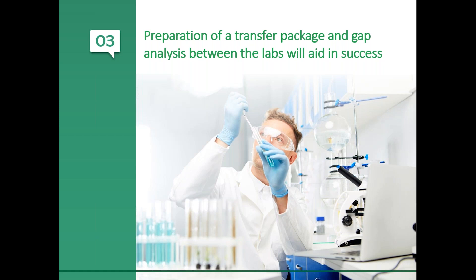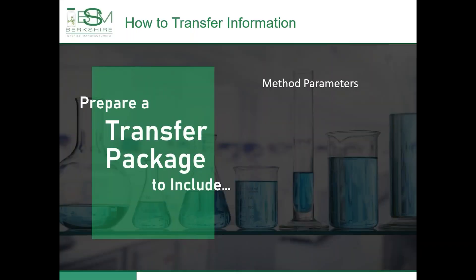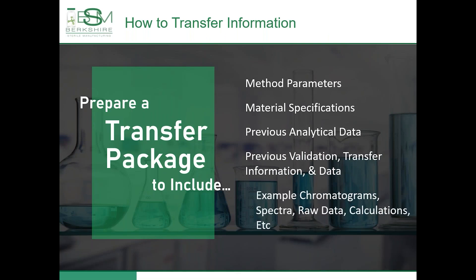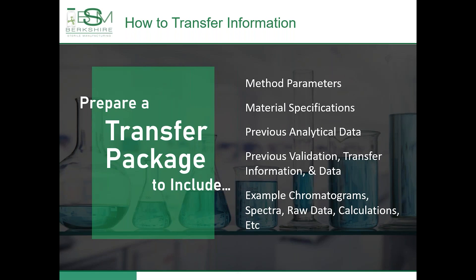A method transfer package should include method parameters, material specifications — including the specifications of the materials used to perform the analysis as well as the release criteria of the material to be tested — any previous analytical data available, previous validation, method transfer information and the associated data, example chromatograms, spectra, raw data, sample preparations, calculations, any special handling instructions, and anything else you think may be necessary to successfully evaluate the method.